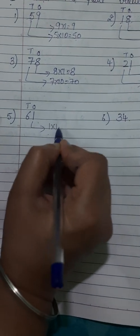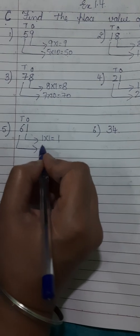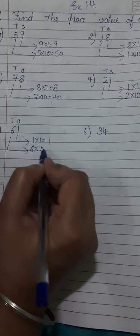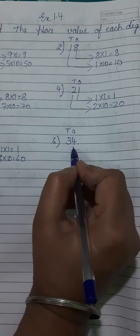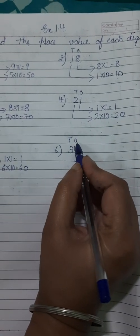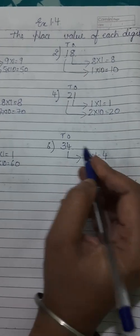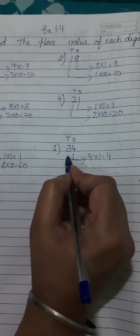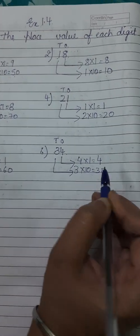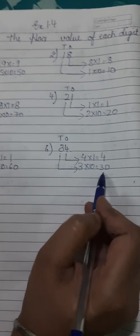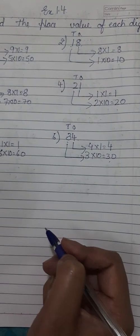That is equal to sixty. Ones place, tens place. The place value of four is four into one, which is equal to four, because four is at the ones place. Three is at the tens place, so three into ten is equal to thirty. Place value of three is thirty. Rest of the sums you have to do yourself in your maths notebook.